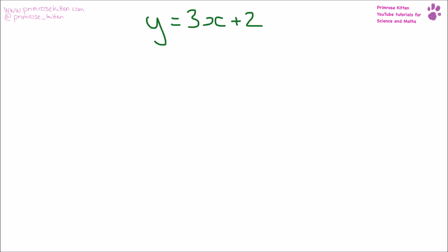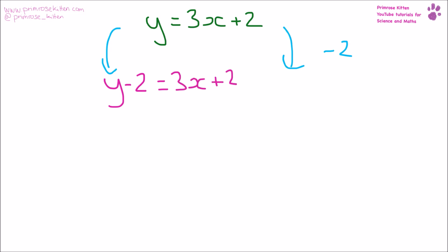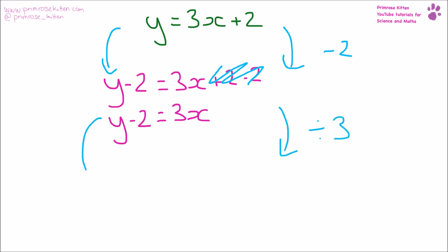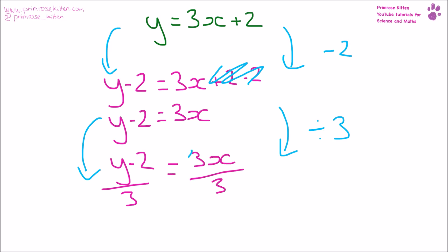Here I want to make x the subject of the formula. It is currently plus two, so what I need to do is minus two from both sides. y − 2 = 3x + 2 − 2. Plus two minus two cancels each other out, so we don't need to write that. y − 2 = 3x. Now we have x times by three, so we need to divide by three. We get y − 2 divided by 3 = 3x divided by 3. Three divided by three cancels, so we end up with y − 2 over 3 = x.